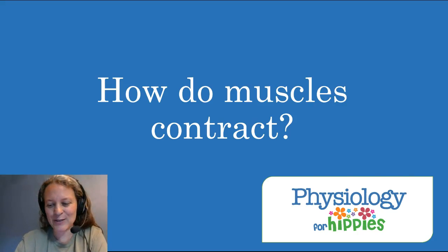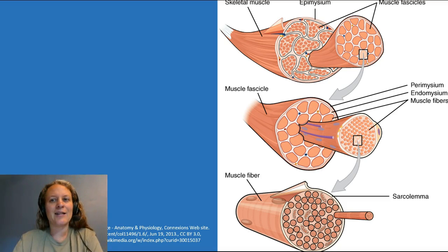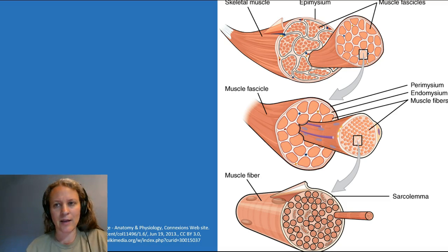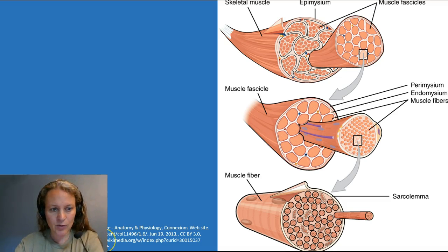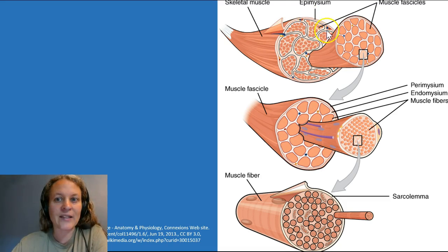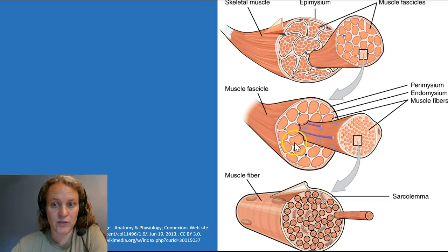Let's talk about how muscles contract. We need to review some terminology because muscles are complicated — there are bunches of bunches of bunches, and each bunch has a different name. So if we take a skeletal muscle and look at it, these big bunches are called fascicles. If we blow up a fascicle, we can see that a fascicle is just a bunch of something else — it's actually a bunch of cells.